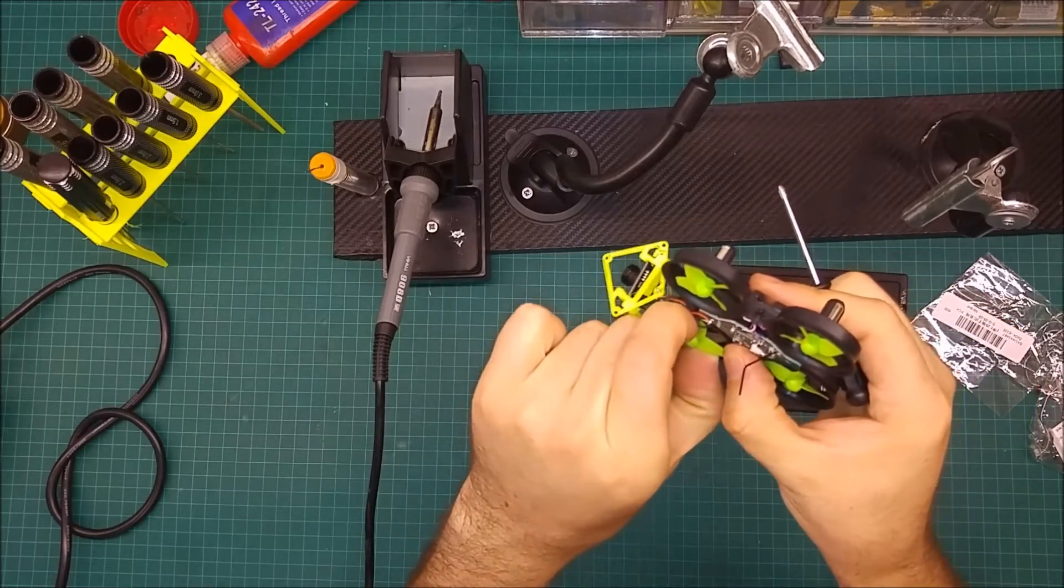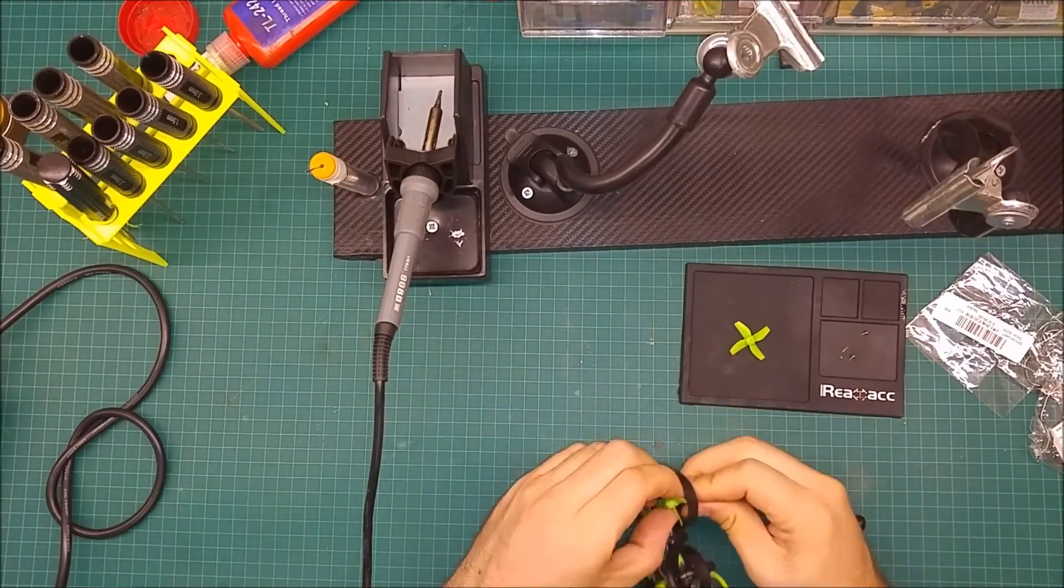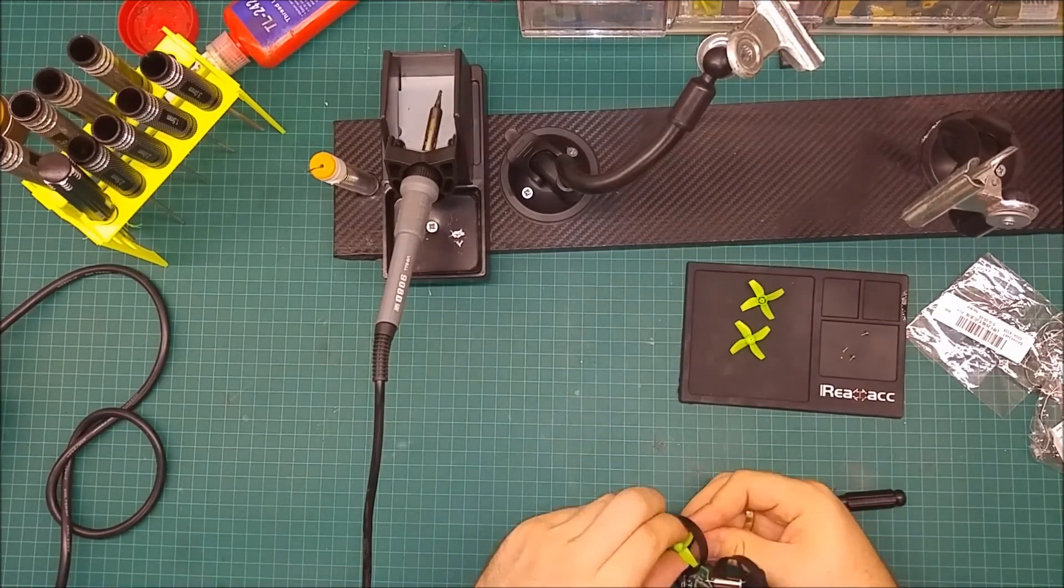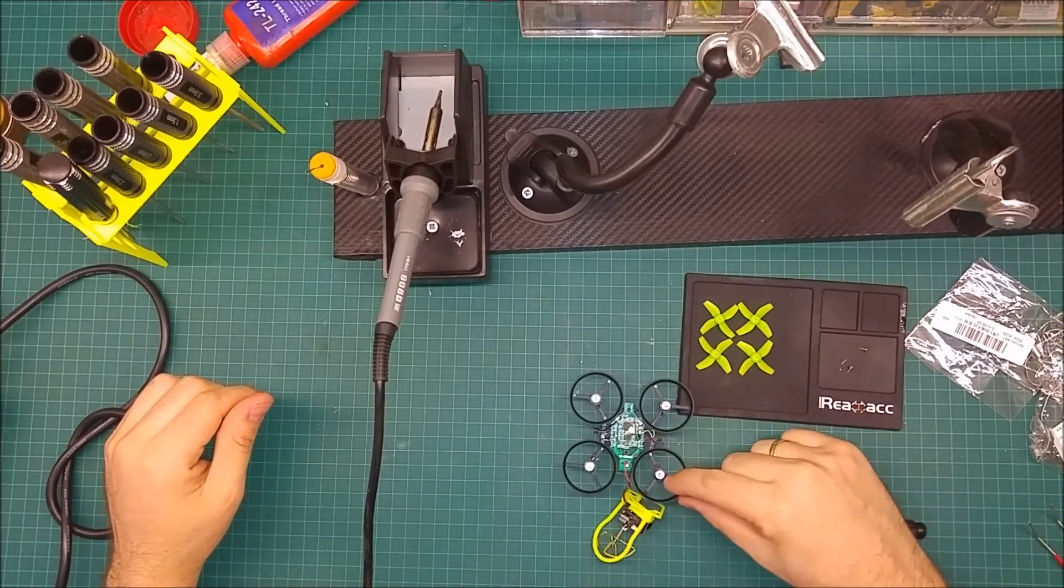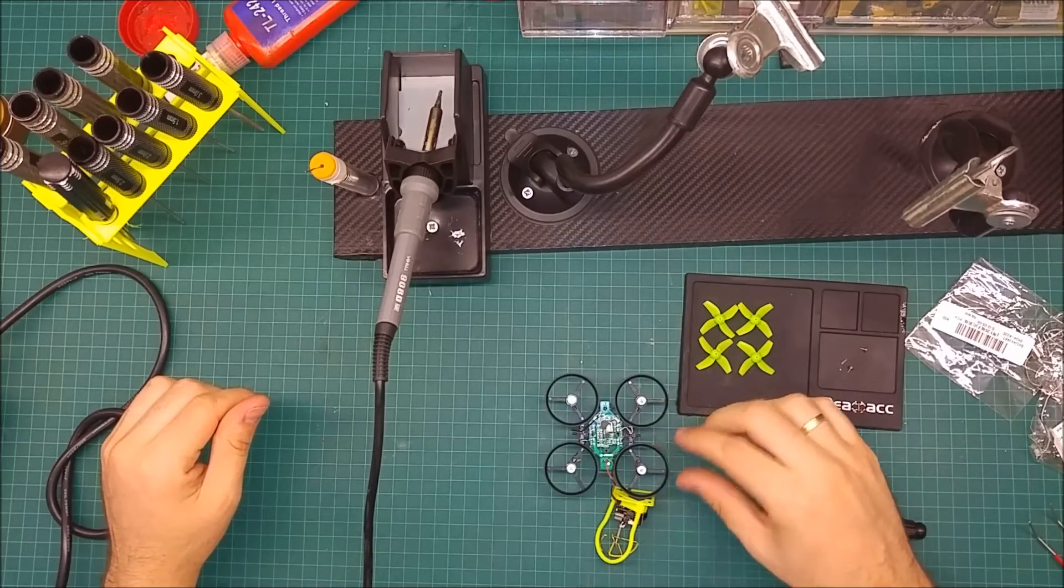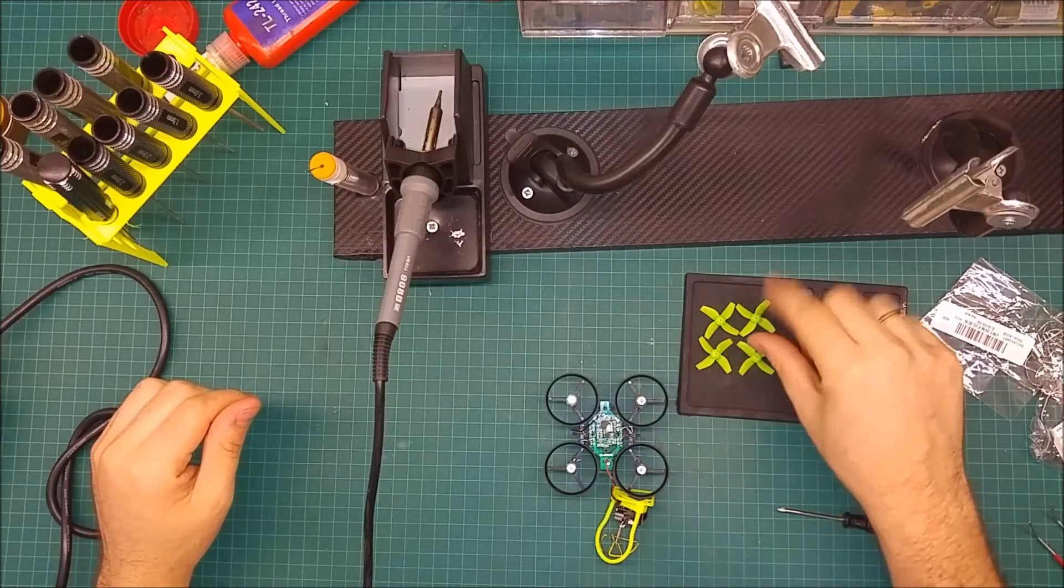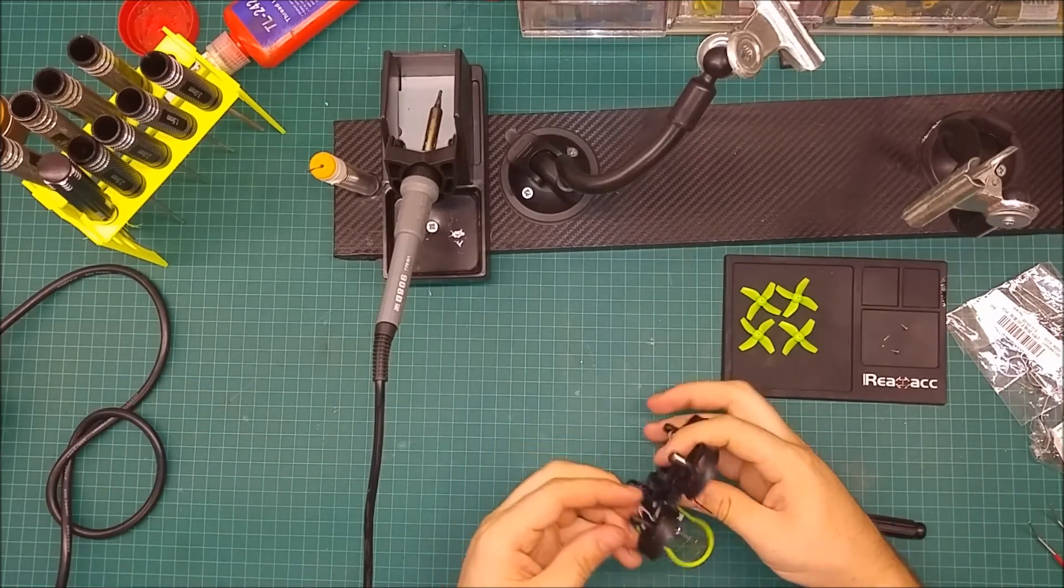First of all, remove the props. It is important which props go where. There is a clockwise and a counterclockwise. So if you're not sure which goes where, when you take out the props, just set it up the same way you took it off and put it aside.